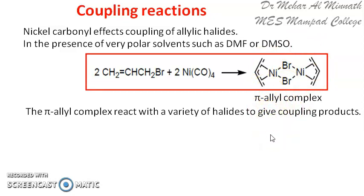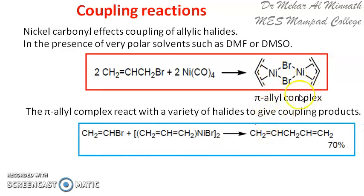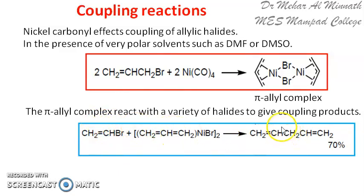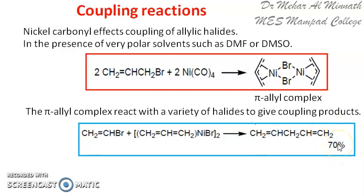The halide need not be an allyl halide — it can be alkyl, aryl, or other halides — and these can be reacted with the pi-allyl complex. Here you can see the pi-allyl complex, and here you have the vinyl bromide. So these two react together: this is the vinyl bromide part, CH₂=CH, and this is CH₂CH=CH₂, the pi-allyl part. This pi-allyl complex is formed in situ.